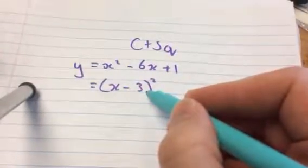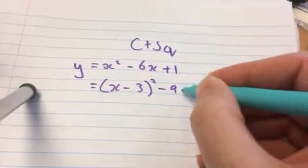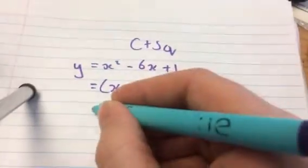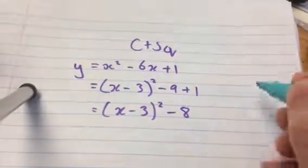We know if we expand that, we'll have a plus 9, so we need to subtract the 9, and we still have that 1 there. So we'd end up with x minus 3 squared minus 8.